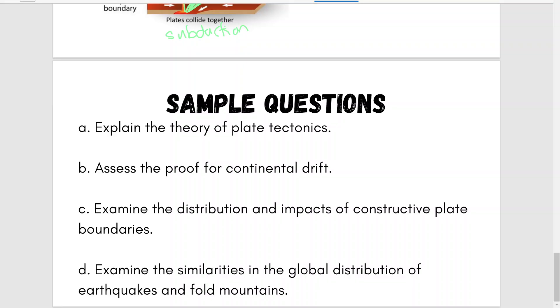Examine similarities in the global distribution of earthquakes and fold mountains. On the surface, what it looks like is talk to me about destructive plate boundaries. What is happening at destructive plate boundaries? We know earthquakes happen. We know fold mountains happen. Now you want to talk about whereabouts in the world they happen. This is where you're talking about your Pacific ring of fire. This is where you bring in the different examples you have. You've probably studied an earthquake, looked at different fold mountains. Bring them in here. Talk about how they form, where they form, and talk about convection currents driving that.